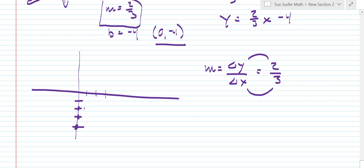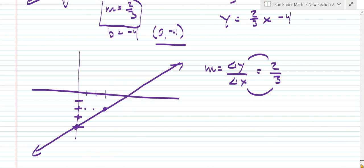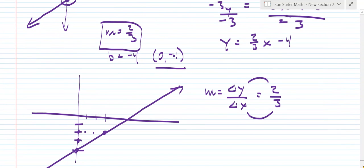So I am going up 1, 2, and then over 1, 2, and 3 and put a point there. Now that we have 2 points, you can draw a line through them. And we have our line. And I did not figure out what the x intercept is, but you can see that these two lines look similar.